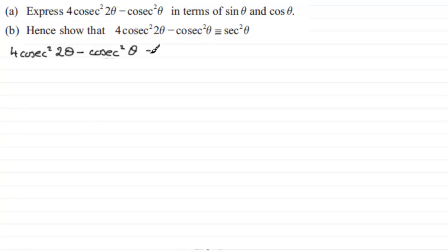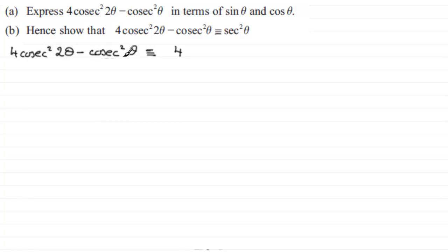I should write an identical sign rather than an equal sign, because we're showing or proving an identity rather than solving an equation. The 4cosec²2θ is the same as 4 times cosec²2θ. The cosec function is 1 over sine of the angle, so here we've got 1 over sin2θ, all squared, which is exactly the same as 4 over sin2θ, all squared.